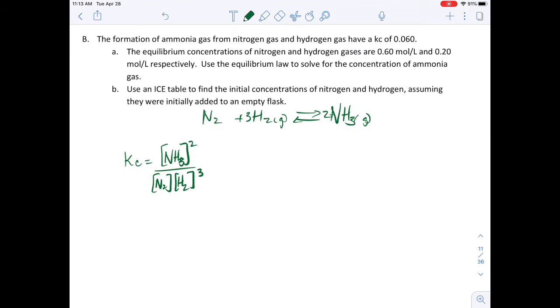This question though tells us that this reaction, the formation of ammonia gas from nitrogen gas and hydrogen gas, has a Kc of 0.060. The equilibrium concentrations of nitrogen and hydrogen gas are 0.60 mole per liter and 0.2 mole per liter respectively. Use the equilibrium law to solve for the concentration of ammonia gas.